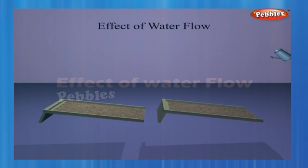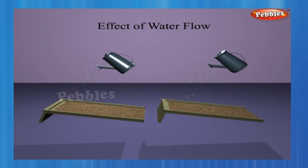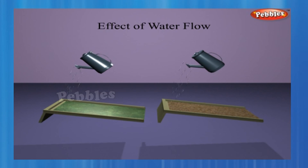Effect of water flow. Take two identical trays and fill them with soil. Plant mustard, green gram, or paddy in one of the trays and water both regularly for a few days until the first tray is covered by plant growth. Now tilt both the trays at the same angle. Pour equal amounts of water gently on both trays so that water flows out. Study the amount of soil that is carried out of each tray — is the amount the same in both? Now pour three or four times the amount of water from a height and again study the amount of soil washed out.